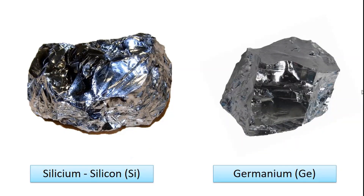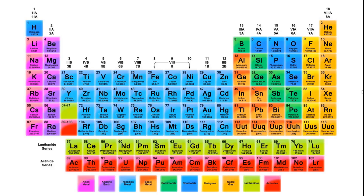The most commonly used semiconductors are silicon and germanium, whose crystal structure is similar to each other. While silicon is very abundant in nature, germanium is very rare. Semiconductor circuit elements are also made of silicon as it is abundant in nature. In the periodic table, they are located in group 4A.